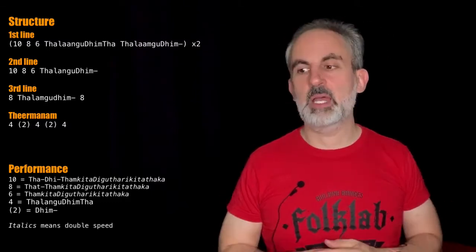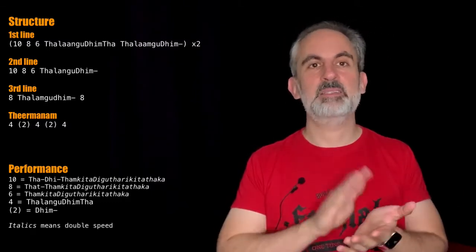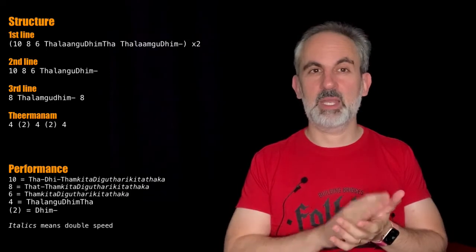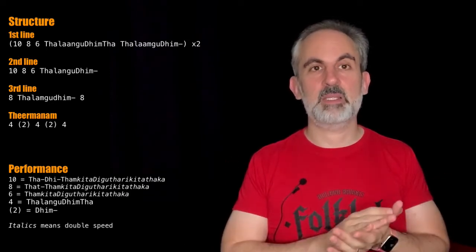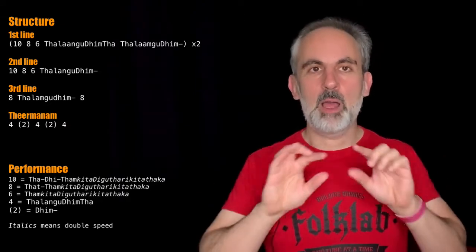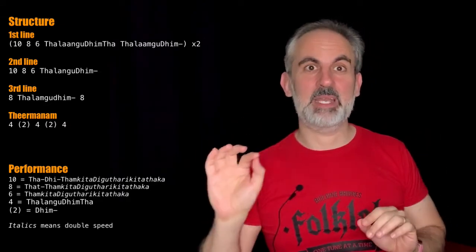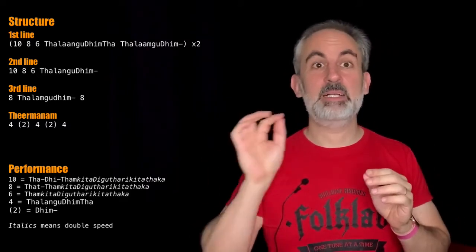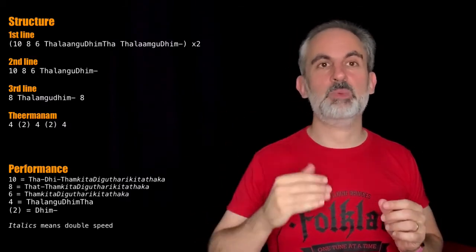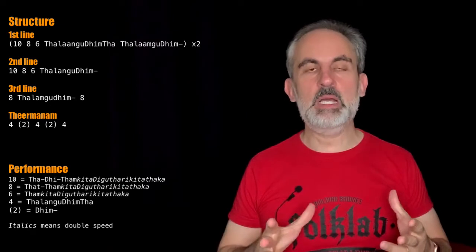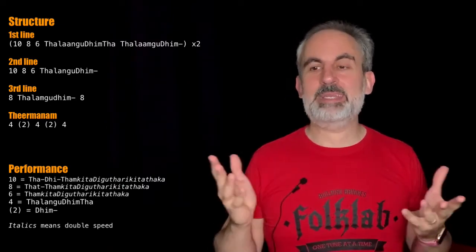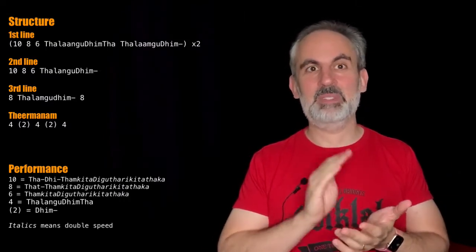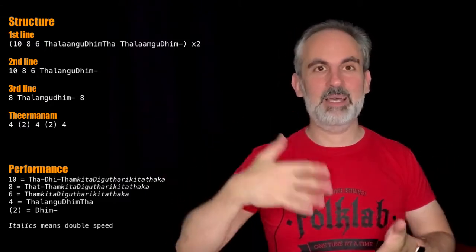In terms of performance, the phrase for ten, we perform it as Talangudimta Talangudimta Tiguta Rei Ketu Taka. The phrase for eight, Talangudimta Tiguta Rei Ketu Taka. And the phrase for six, Talangudimta Tiguta Rei Ketu Taka. So you see in a way that the origin phrase is the six, and then we build it up. To get the eight beat phrase, we add Tat at the beginning, and to get the ten beat phrase, we add Tati. That's how we usually conform these types of related beats. The terminum at the end is nothing but Talangudimta Dim, Talangudimta Dim, Talangudimta, and then the next Dim would be the end of the composition.